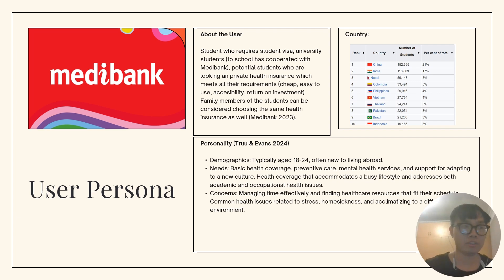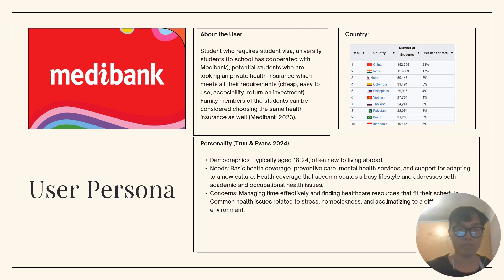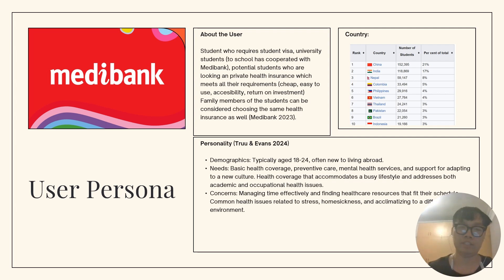Our target customer is students who require a student visa — university students who hold a student visa according to the university. They are looking for affordable health insurance that meets all their requirements: cheap, easy to use, accessible, and covering themselves or their family members. They may be coming from the top 10 countries well-known in Australia in terms of student numbers, and are usually between 18 and 24. They need basic health coverage and a way to find healthcare that fits their schedule. They also face mental health challenges including stress, homesickness, and adjusting to different environments.